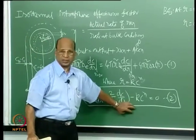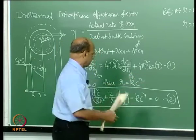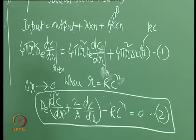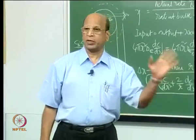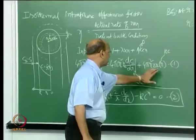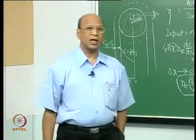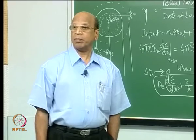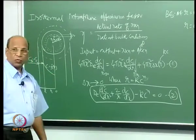If you want to write it in the standard d²y/dx² form, non-dimensionalize: let y = C, x = r, and you will automatically get the Thiele modulus. Non-dimensionalizing using C_b and capital R — C_naught = C_b, and the length scale is capital R — will give you the Thiele modulus naturally. Please solve this for slab, cylinder, and sphere.